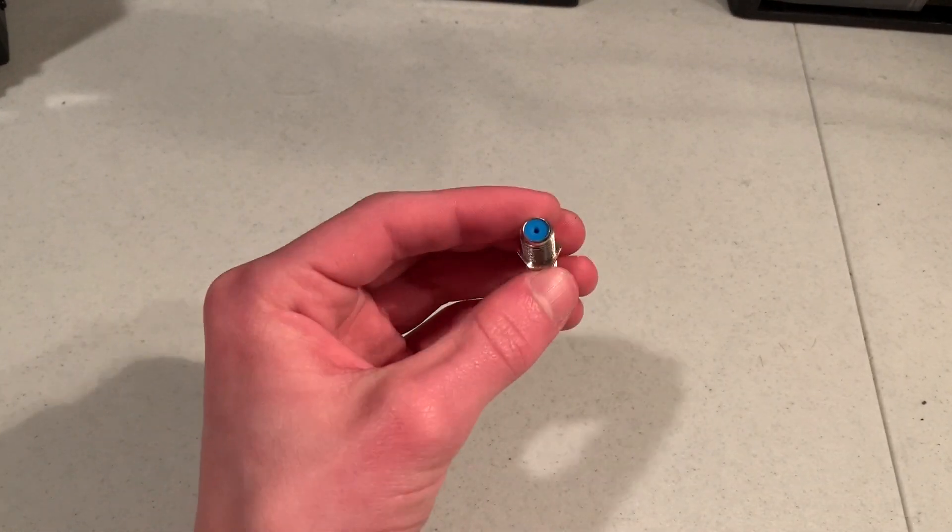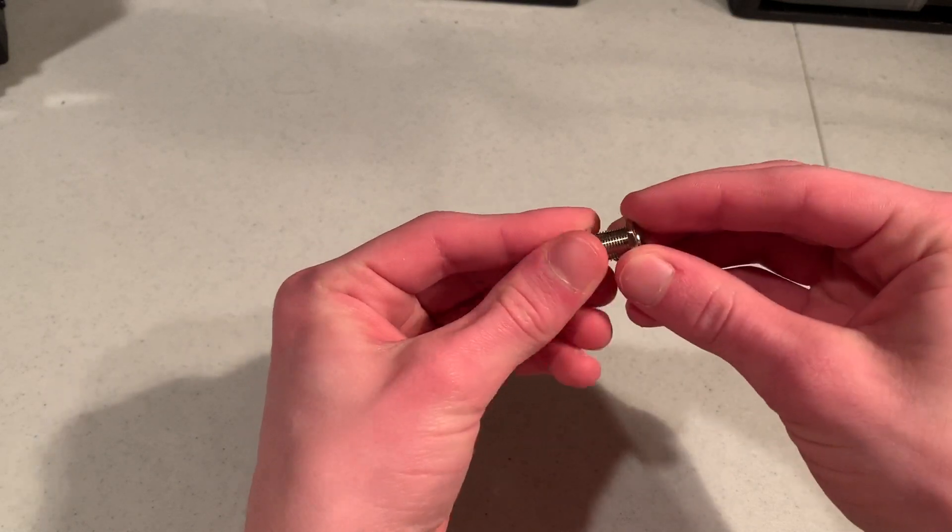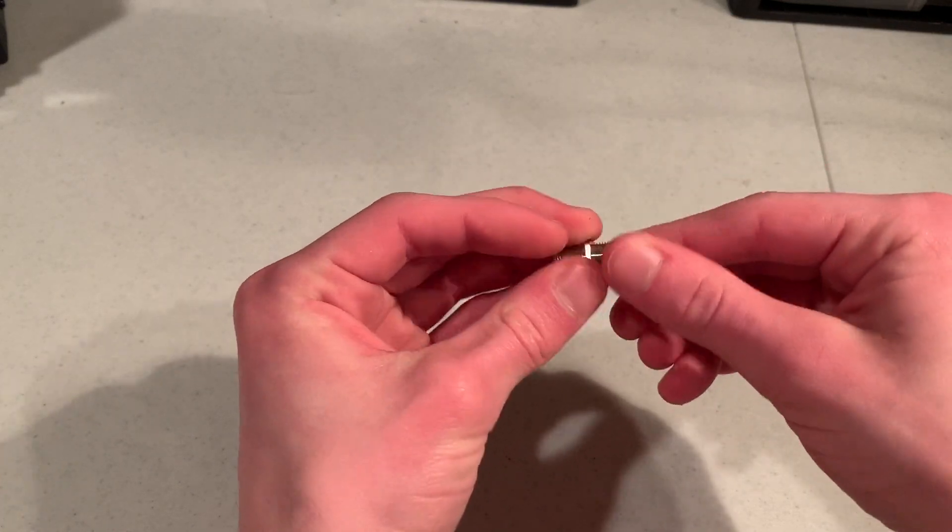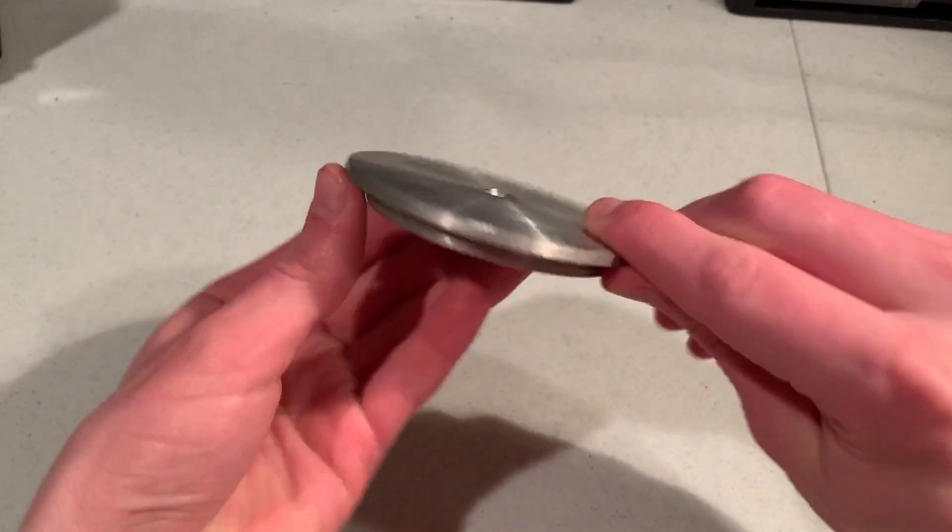So then I was ready to try it out in practice. My plan was to use this F-type connector so I could connect a coax cable to one side and put my antenna on the other side. And then I also wanted a ground plane. And I was lucky to have this big metal disc lying around that seemed perfect for the job. It even had a hole in it.